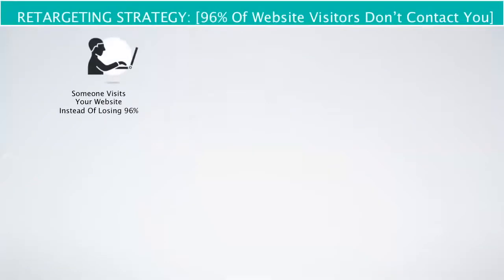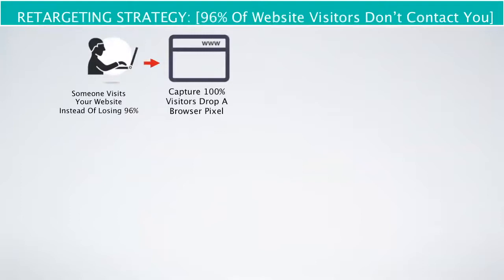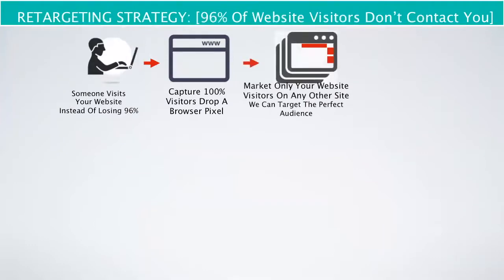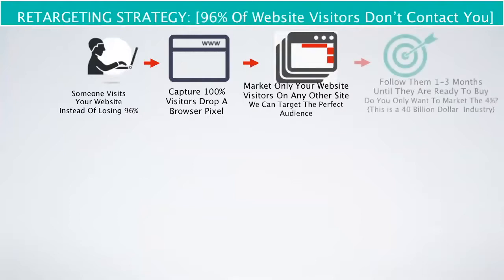So this is what usually happens: someone will visit your website. Instead of losing that 96%, what we do is help you capture 100% of every visitor that comes to your site. We do that by dropping a browser pixel — just a little piece of invisible code that goes on your website. Whenever anybody comes to your website, they get this pixel, and now you can market to that person on any other site.